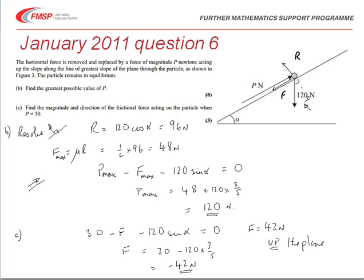The marking in this part of the question was first of all to give a method mark for doing the resolution away from the plane perpendicular to the plane, and another A mark for getting the value of 96 newtons for R. A method mark for using F equals mu R, and then a method mark and two answer marks for resolving up the plane, and a final A mark for getting the value 120. So in total there are eight marks for part b of the question.